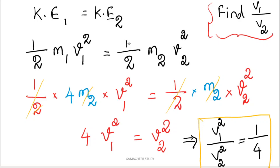Substituting M1 = 4M2: one-half × 4M2 × V1 squared equals one-half × M2 × V2 squared. The one-half cancels on both sides, and M2 cancels, giving 4 × V1 squared equals V2 squared.